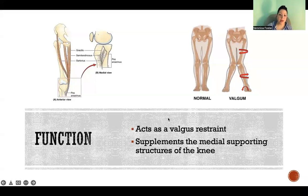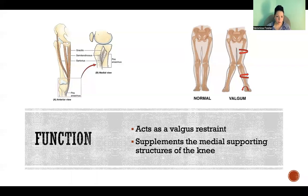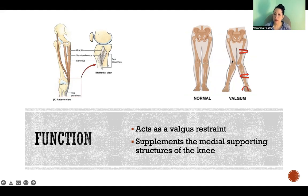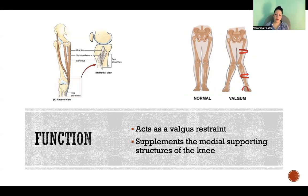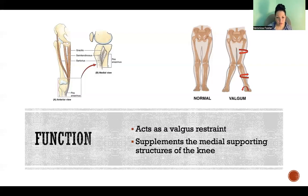Functionally speaking, its role is as a medial knee stabilizer. It acts as a valgus restraint and supplements the medial supporting structures of the knee. Looking at the picture on the right, this position is a valgus knee position — where the knees bow inward, as opposed to a varus position where the knees bow out. It is the medial knee restraints, like the MCL and the medial portion of the joint capsule and other passive restraints, that resist this valgus motion. The pes anserinus tendon, because of where it's located, contributes to that function.